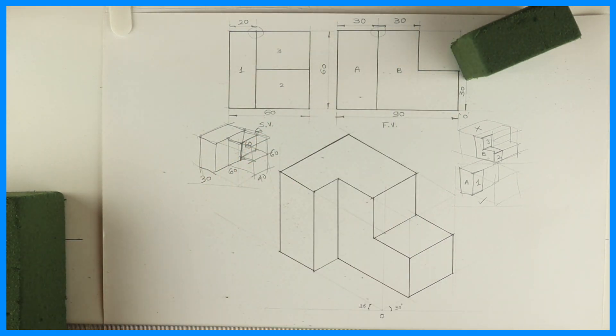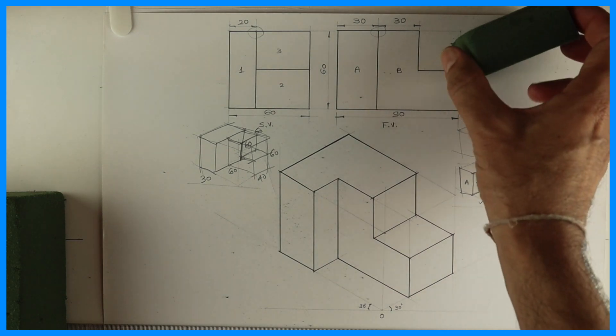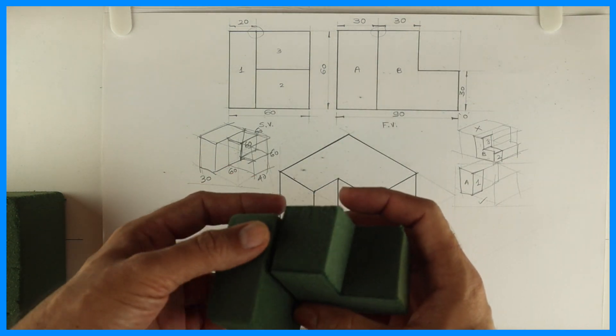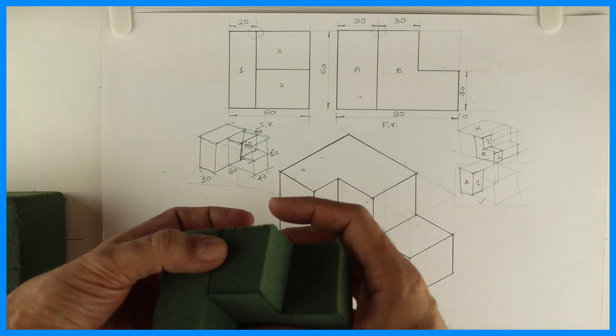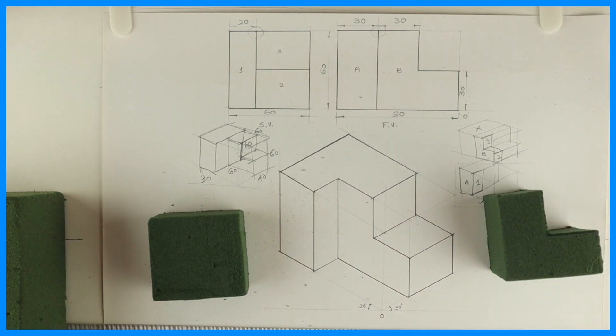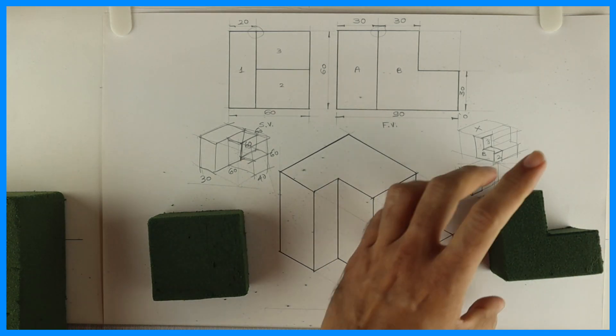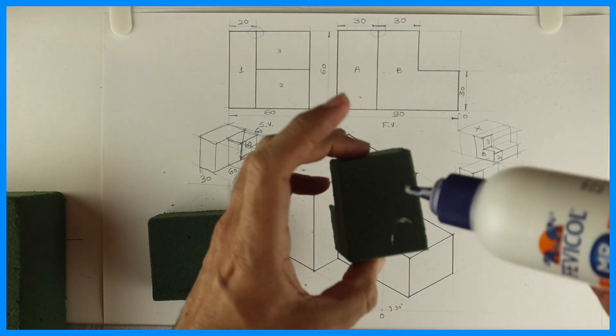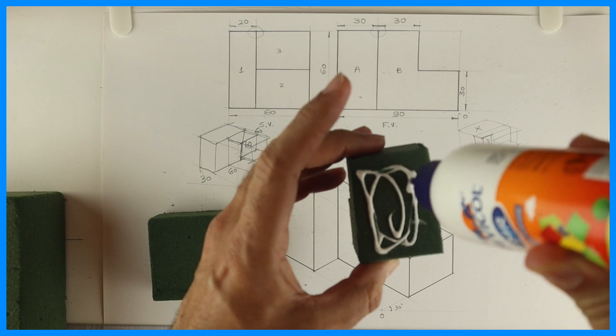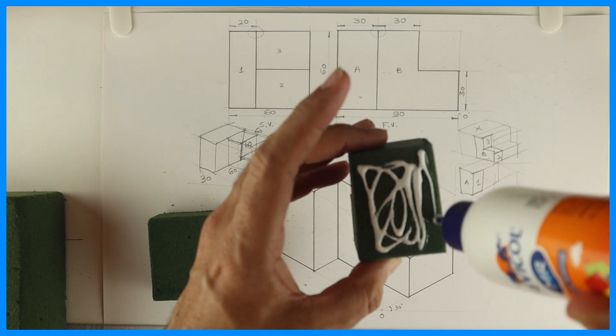See this. So now what we need to do, we will take a fevicol and we will stick it like this. So we will get the 3D object in floral foam. This is very useful for CBSE students, those who are appearing for engineering graphics exam. In 12th standard they have practical work. So this is a part of it.